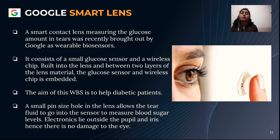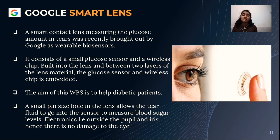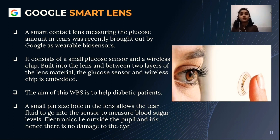Another type of wearable biosensor is Google Smart Lens — a smart contact lens measuring the glucose amount in tears. It consists of a small glucose sensor and a wireless chip built into the lens, between two layers of lens material. The aim of this wearable biosensor is to help diabetic patients. A small pin-sized hole in the lens allows tear fluid to enter the sensor to measure blood sugar levels. Electronics lie outside the pupil and iris, so there is no damage to the eye.